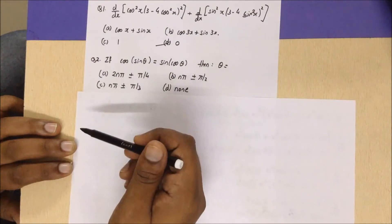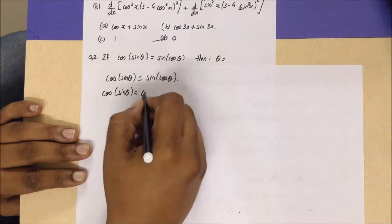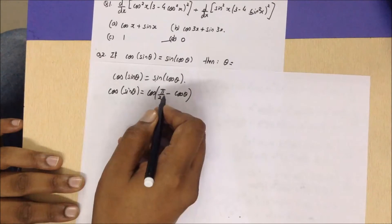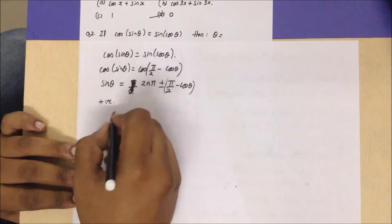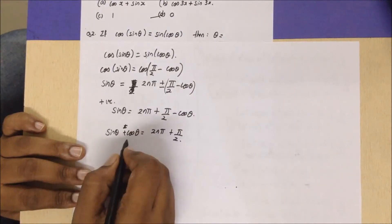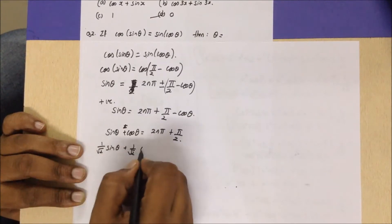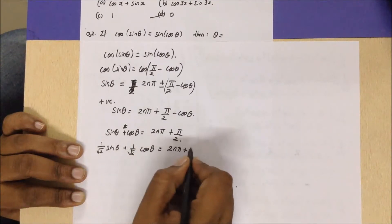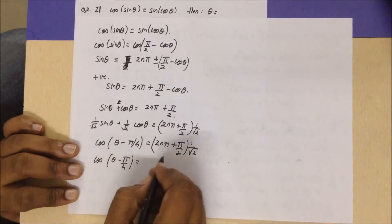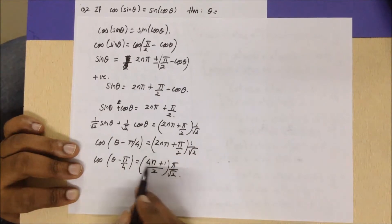Moving to the next question: if cos(sinθ) = sin(cosθ), find the value of θ. We rewrite sin(cosθ) as cos(π/2 − cosθ), giving cos(sinθ) = cos(π/2 − cosθ). Taking the positive case from cosA = cosB, we get sinθ = 2nπ + π/2 − cosθ. Dividing throughout by √2 yields (1/√2)sinθ + (1/√2)cosθ = (2nπ + π/2)/√2, i.e., cos(θ − π/4) = (4n + 1)π/(2√2).